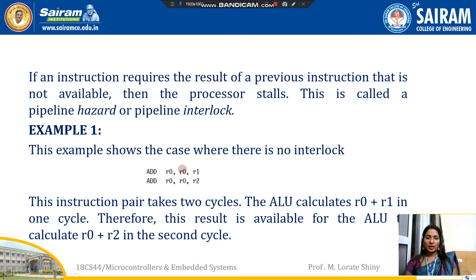Let's see a few examples. In the first example, there are two instructions. To complete these two instructions, the processor takes only two cycles — there is no interlock. In the first cycle, the ADD instruction completes: it adds R0 and R1 and stores the result in R0, so R0 is ready by the end of the first cycle. Then in the second cycle, the next ADD instruction is executed using the ready R0 value. So these two instructions take only two cycles.